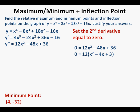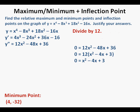We factor out a 12, giving 0 equals 12 times the quantity x squared minus 4x plus 3. Then we divide by 12, giving 0 equals x squared minus 4x plus 3. We factor the quadratic trinomial to get 0 equals the quantity x minus 1 times the quantity x minus 3. Solving for x gives us x equals 1 and x equals 3.